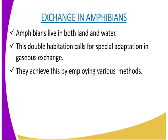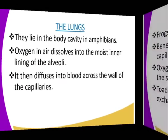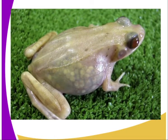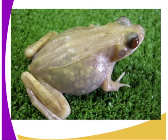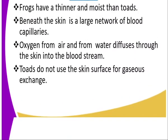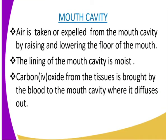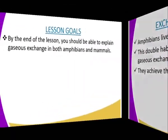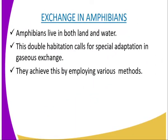For gaseous exchange in amphibians, we have a diagrammatic representation of an amphibian — the frog. Amphibians live in both land and water, and this double life calls for special adaptations in gaseous exchange. They achieve this by employing the following methods of gaseous exchange.